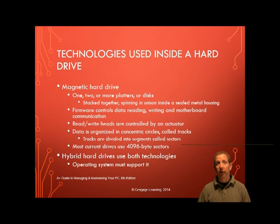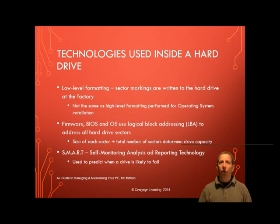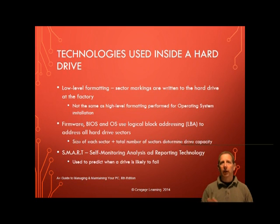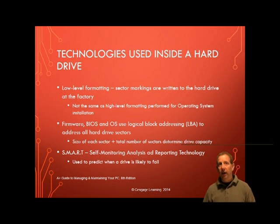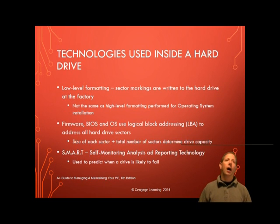Before an SSD or magnetic drive leaves the factory, sector markings are written to it in a process called a low-level format. This formatting is different from the high-level format that Windows does after a drive is installed. The hard drive firmware, BIOS, and operating system use a simple sequential numbering system called logical block addressing, or LBA, to address all the sectors of the drive. The size of each sector and total number of sectors determine the drive's capacity, usually measured in gigabytes or terabytes, with each terabyte being 1024 gigabytes. Magnetic drives are generally much larger in capacity than SSD drives.